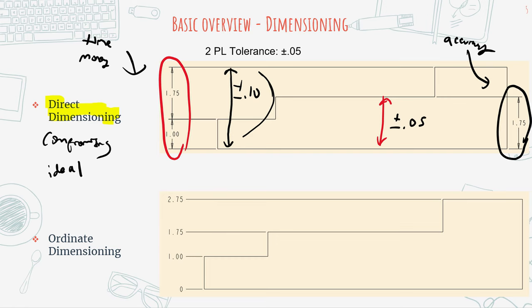The final dimensioning type I want to talk about is ordinate dimensioning. In ordinate dimensioning, you dimension everything relative to an ordinate — a zero line. Every dimension is relative to that zero line along the direction of the dimensioning process. So in this case, this is one inch, this is 1.75 inches, this is 2.75 inches.